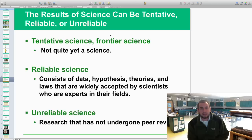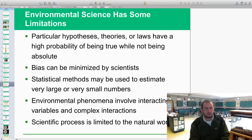Results of science can be tentative, reliable, or unreliable. Tentative science that we call frontier science is really not quite a science yet. Hasn't been fully dove into by the scientific community, maybe a few members branching out on it but not everybody. Reliable science consists of data, hypotheses, theories, laws, widely accepted by scientists who are experts in their field. Then you have your unreliable science that is research that has not really undergone a lot of peer review. If no one else looks at it as a scientific community or evaluates it, then it really isn't that significant. It's not really as reliable as reliable science would be.